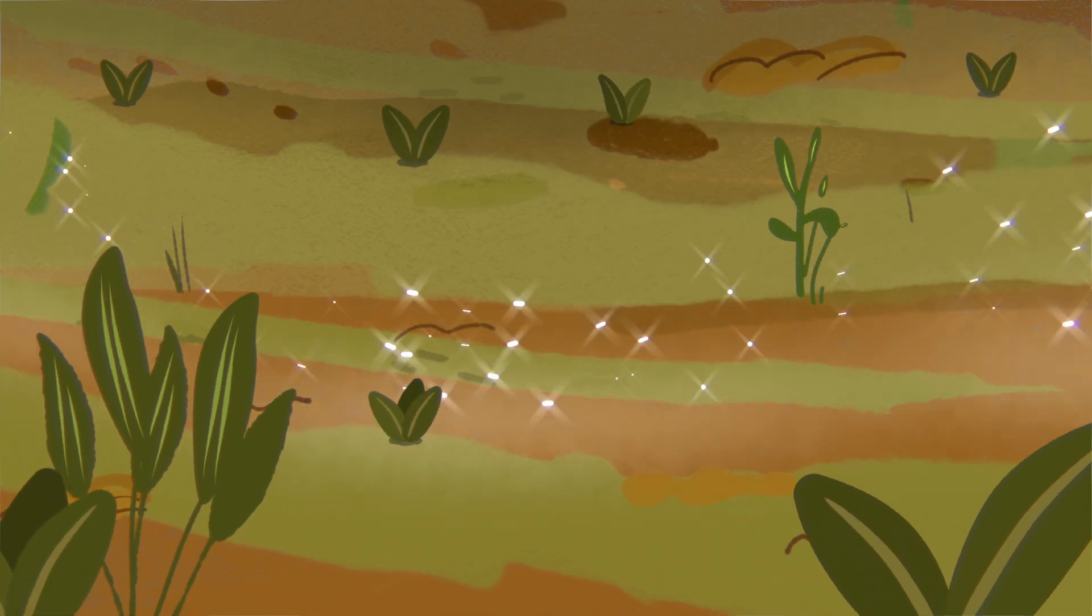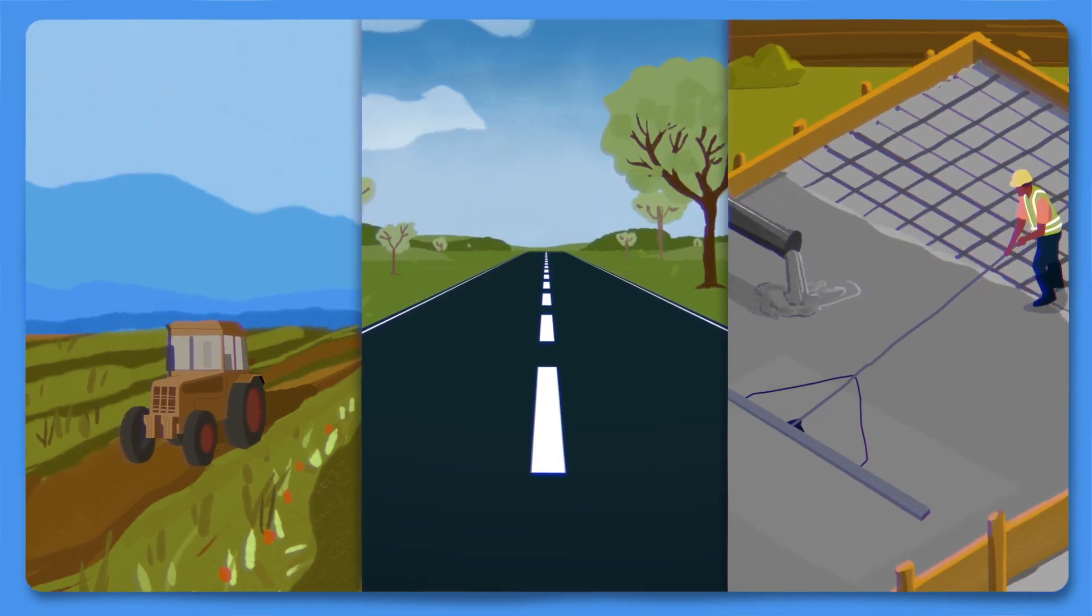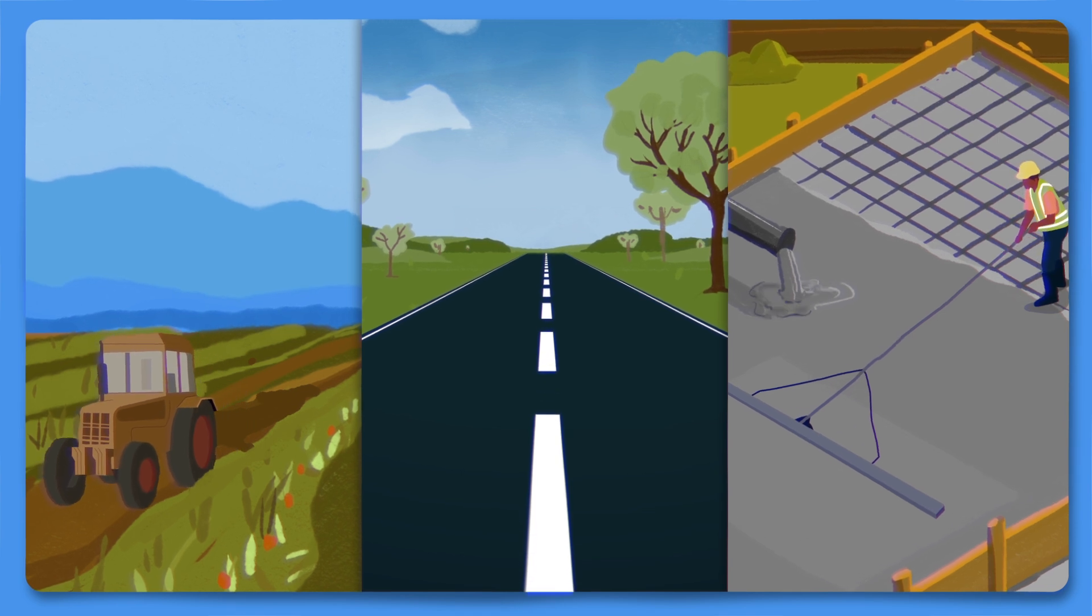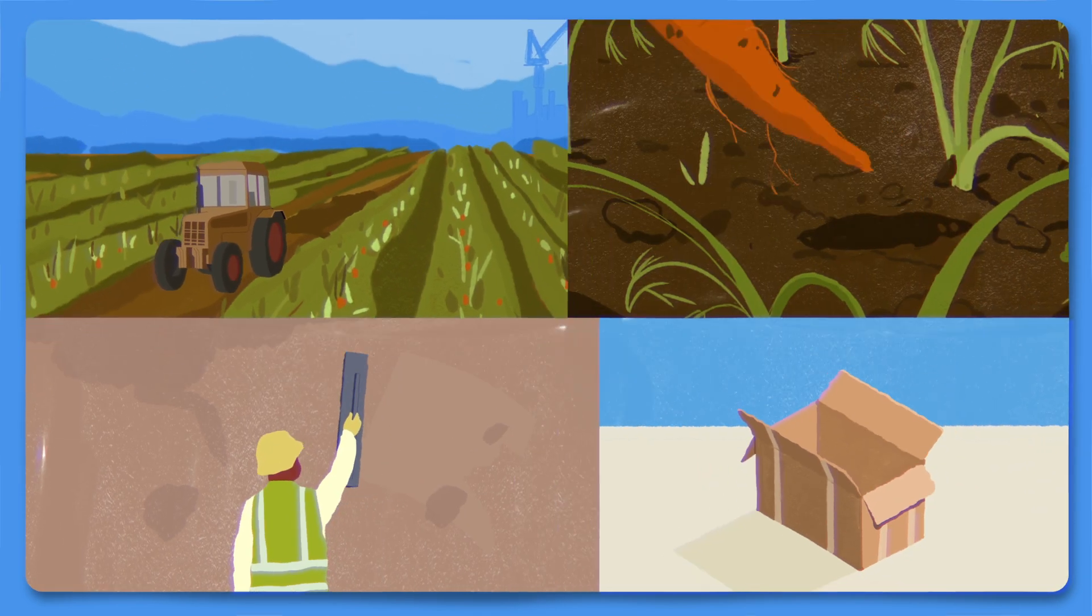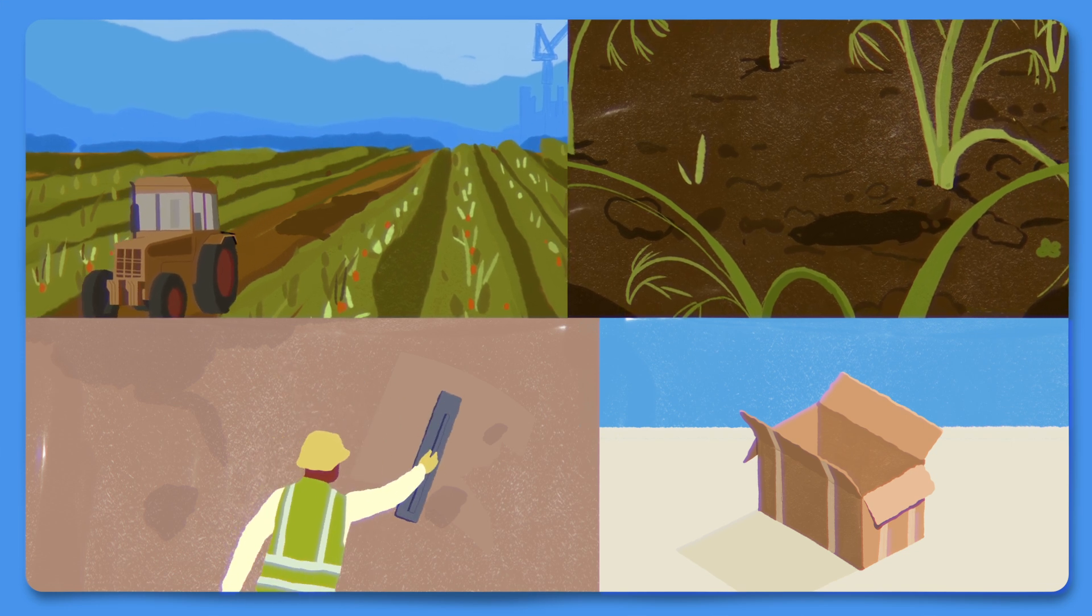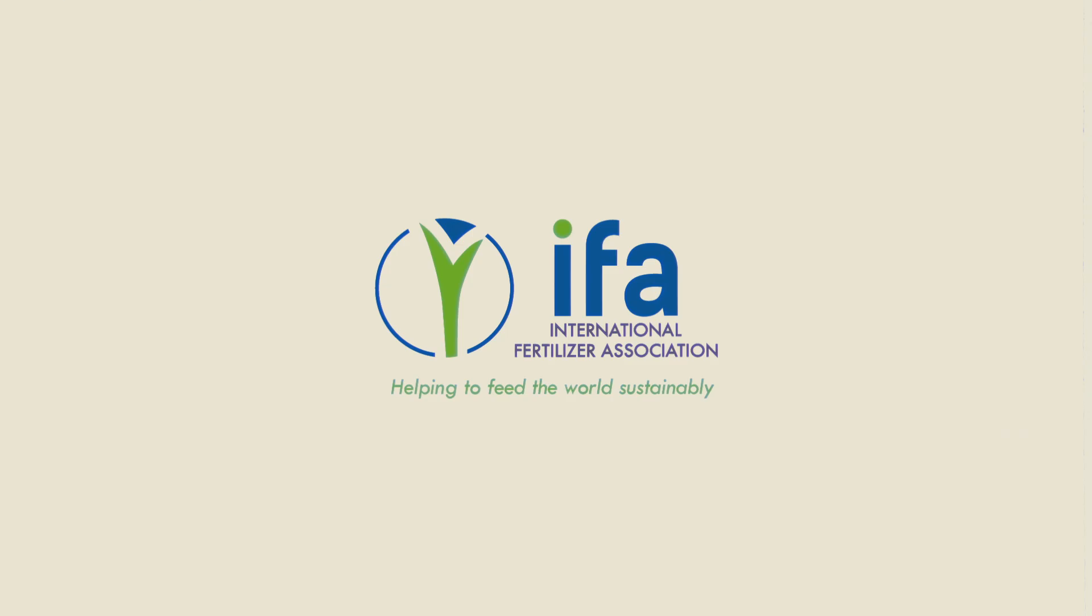This is what a circular economy looks like. Taking something that was considered as waste and turning it into a valuable resource. So, the next time you see farmland, a road, or a building under construction, think about phosphogypsum. What was once a forgotten byproduct is now part of a smarter, more sustainable future.